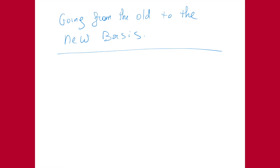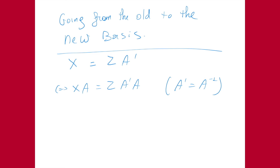To go from the old basis to the new basis — knowing x and wanting z — we start from x = z·A' and multiply both sides by A: x·A = z·A'·A. Since A is orthogonal, A' equals A-inverse, so A'·A is the identity matrix. Therefore z = x·A.